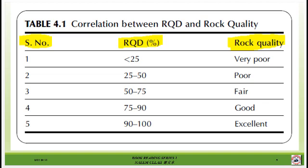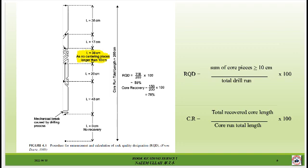Table 4.1 shows the correlation between RQD and rock quality. If we have RQD less than 25 percent, it is classified as very poor rock quality. If we have 90 to 100 percent RQD, it is classified as excellent rock quality.